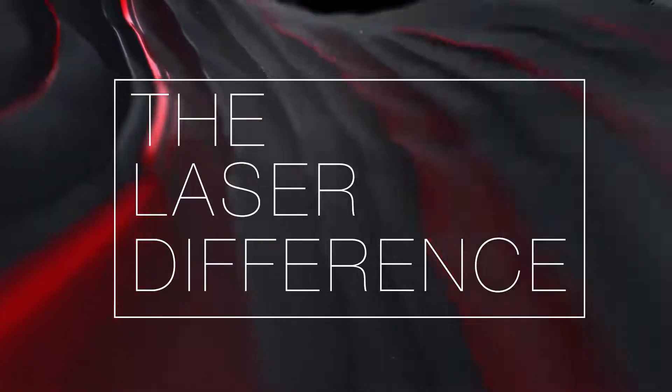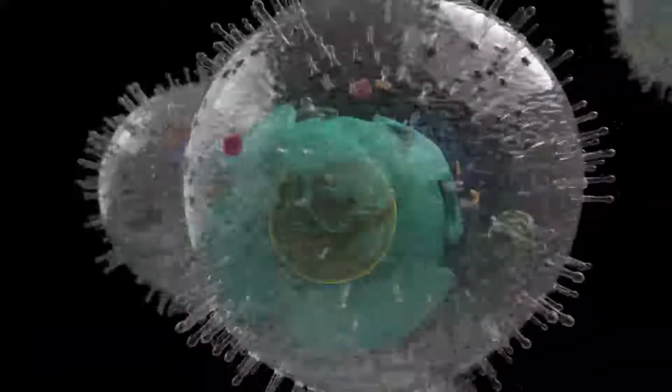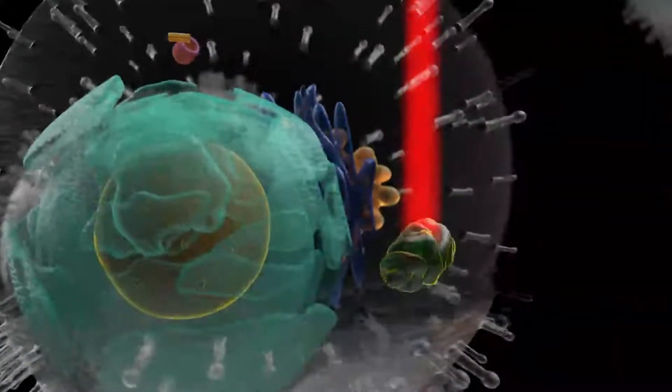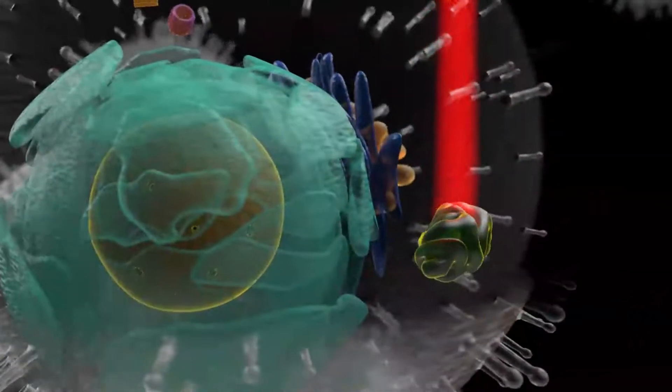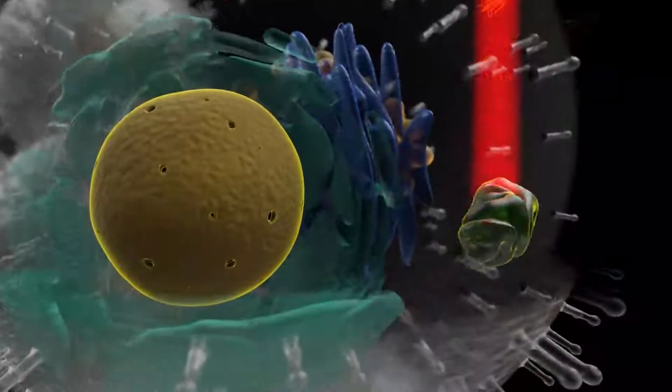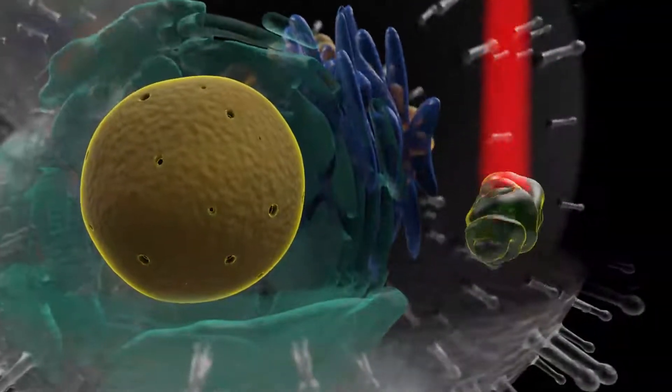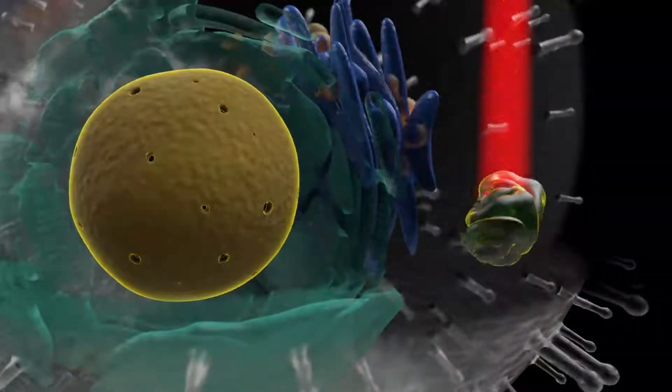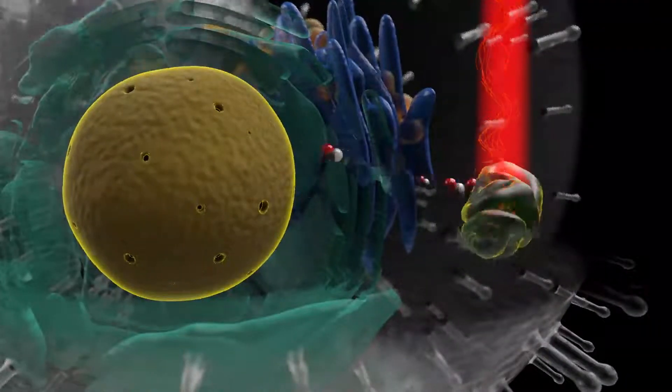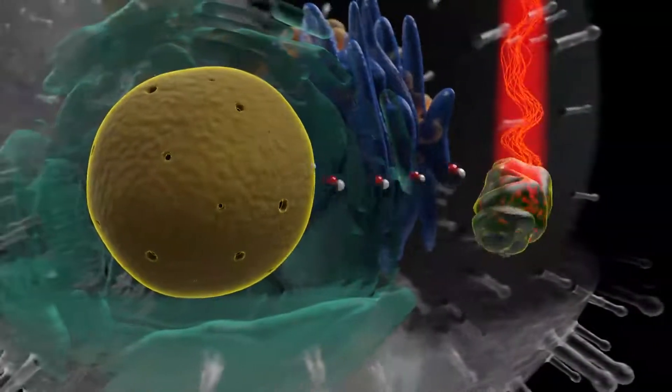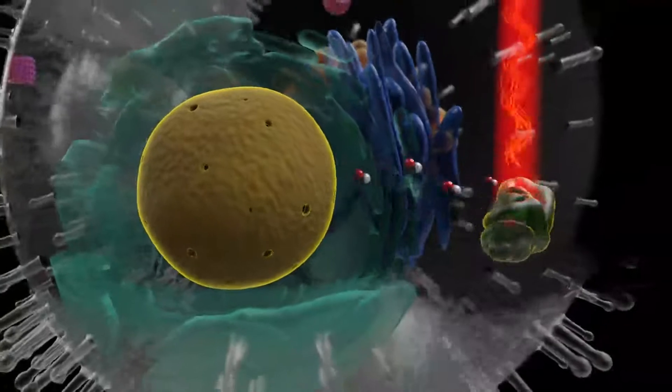Erchonia lasers can be used to target and stimulate the mitochondria of a cell to increase the energy production within the cell so it can perform essential functions needed to stabilize. The increase in mitochondria energy provided by the Erchonia laser will produce signaling molecules shown to activate various beneficial biological changes.